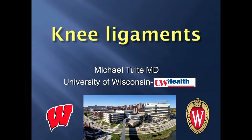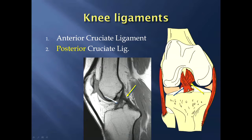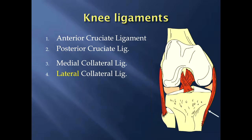The first two ligaments to mention are the anterior cruciate ligament and the posterior cruciate ligament. Cruciate is Latin for cross, and if you notice on this sagittal proton density MR image, the ACL and PCL cross each other, and on a frontal view, the ACL and PCL cross each other as well — so two paired cruciate ligaments.